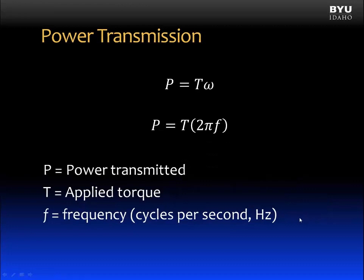Now power transmission can also be given with this formula, where power is equal to the applied torque times 2 pi times F, for F is the frequency, or cycles per second. Sometimes for machinery, instead of angular velocity, a frequency is specified. The frequency is the number of revolutions the shaft makes in 1 second, and so it has the units of hertz, or cycles per second.